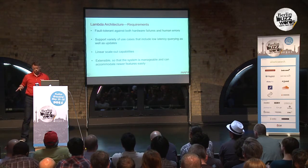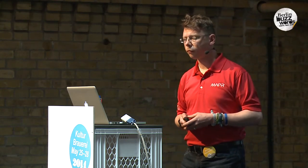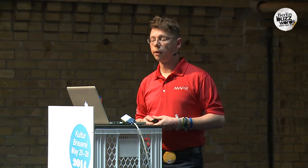Looking at the experience he had at BackType and Twitter, he and his team put together a number of requirements they thought would be desirable for such a system. It should be fault tolerant against both hardware failures and human errors. Obviously, given Twitter's workload, not only batch mode should be supported but also low-latency queries. It should have the capability of scaling out linearly by throwing more commodity hardware at it. And it should also be extensible — business requirements might change, your environment might change, your user base might change — so you want a system able to manage, operate, and accommodate new features.